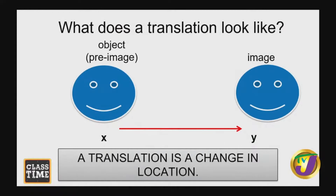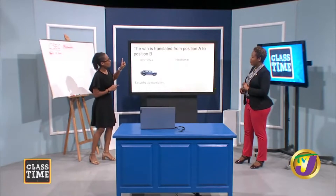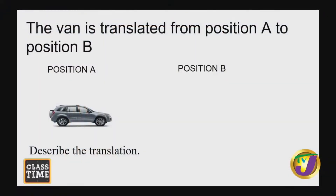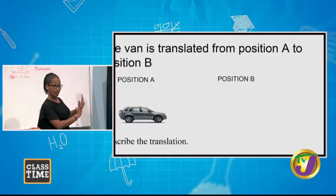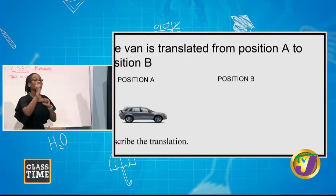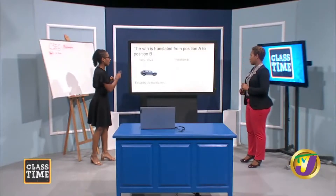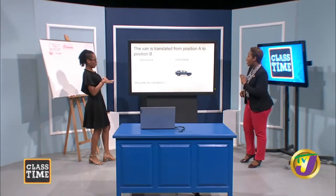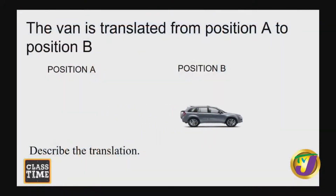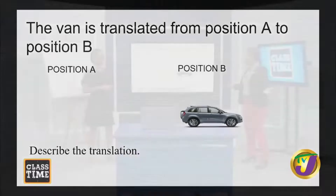Here we have a van. The van is translated from position A to position B. We spoke about translation being a change in location, so describe this translation. The van drove to the right — it drove directly to the right over to position B. Good job. Nothing else changed.